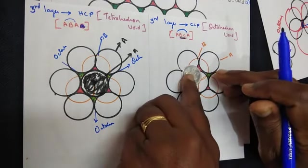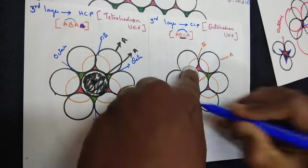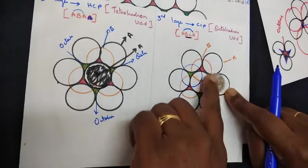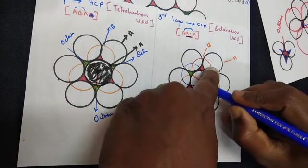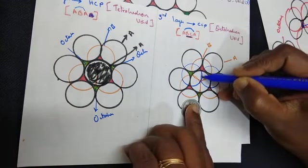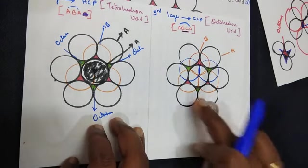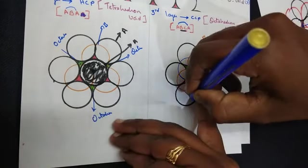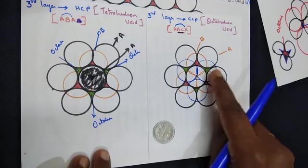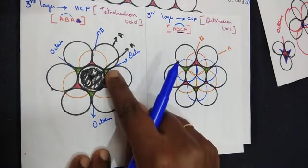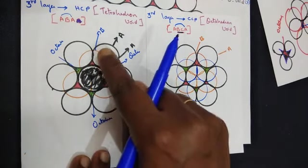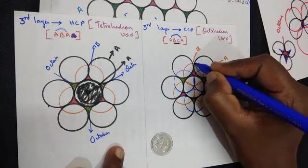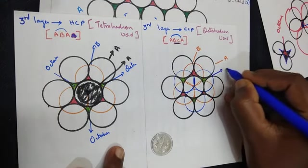Covering up the octahedral void with the third layer — one more octahedral void here, drawing one more sphere, and here again an octahedral void is covered. This is the meaning of the third layer being arranged over the second layer in such a way it covers up the octahedral void. In HCP it covers the tetrahedral void; in the CCP arrangement it covers the octahedral void. So layer A is black, layer B is orange, and layer C is blue. This gives the ABC arrangement of cubic close packing.